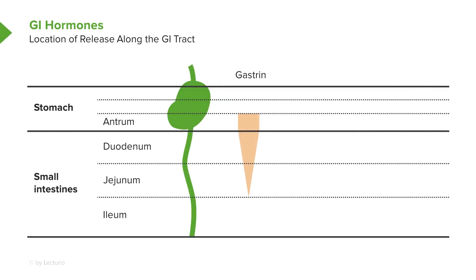Gastrin is released from G cells in the bottom portion of the stomach to the duodenum and it tapers off in the ileum. Glucose-dependent insulinotropic peptide (gastric inhibitory peptide) is released in the duodenum and the jejunum. Motilin is released in the same locations from M cells.